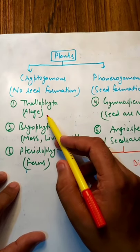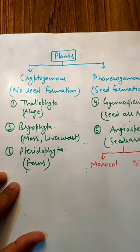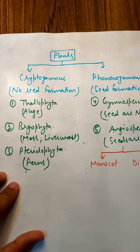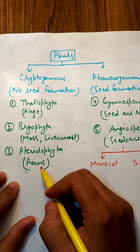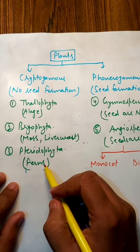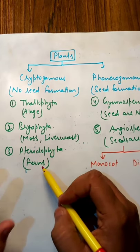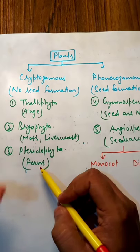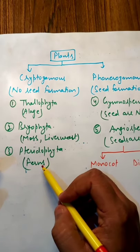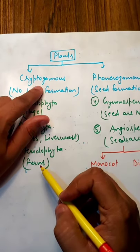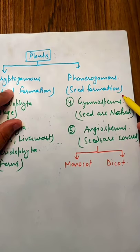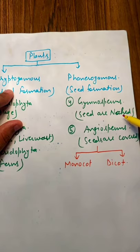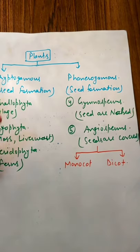Cryptogamous में तीन divisions आते हैं: thallophyta जिसको हम algae बोलते हैं, second is bryophyta जिसके examples हैं mosses and liverworts, and third is pteridophyta जिसके अंदर ferns आते हैं। इन तीनों divisions में कोई seed नहीं बनता, इसलिए इनको cryptogamous बोला जाता है। Phanerogamous जिनके अंदर seed का formation होता है — अगर यह seed naked है तो gymnosperm, इसके बाद अगर covered है तो angiosperm।